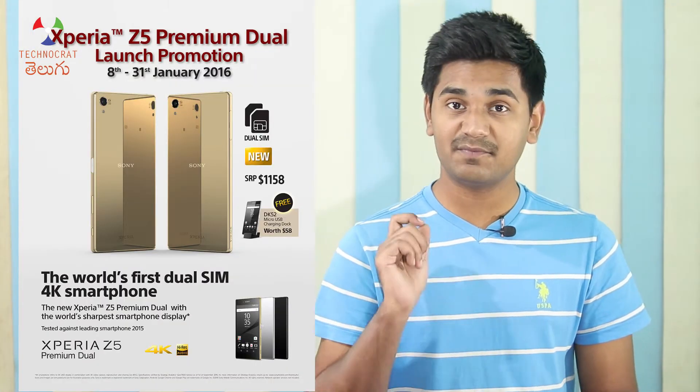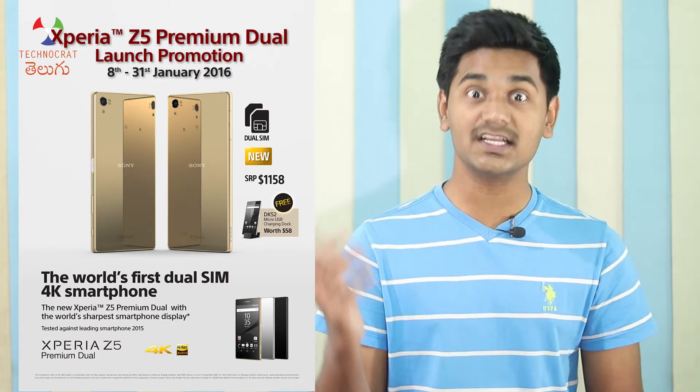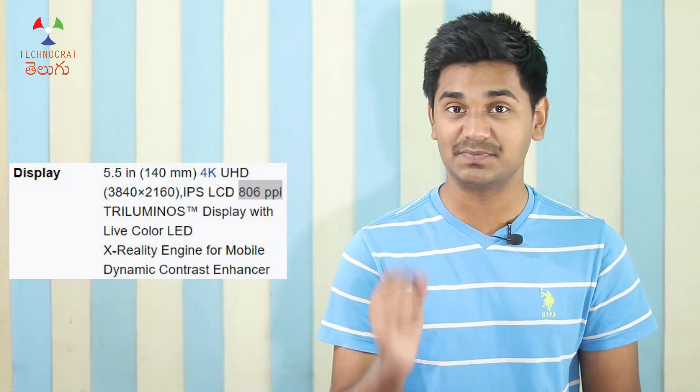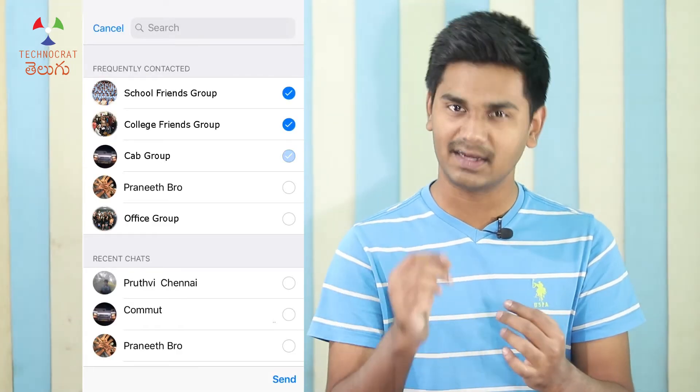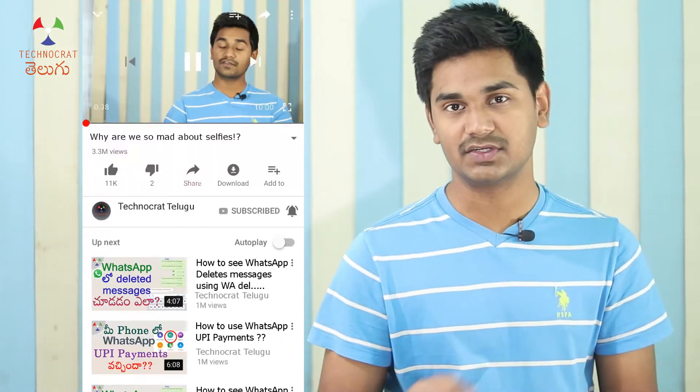The Sony Xperia Z5 Premium launched in 2016 as the first phone with a 4K display on mobile, with 806 PPI resolution. There is, however, a lot of marketing tactics involved — beyond 300 PPI the human eye cannot really distinguish the difference, so the extremely high PPI is more of a marketing feature than a practical benefit.